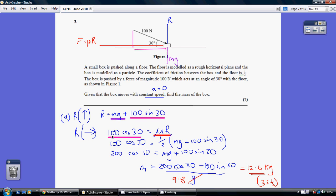Now resolving horizontally, going left to right, we've got the pink force. We've got this element of the 100 newtons. So that's 100 cos 30, that's adjacent. And against this going in this direction is our friction.